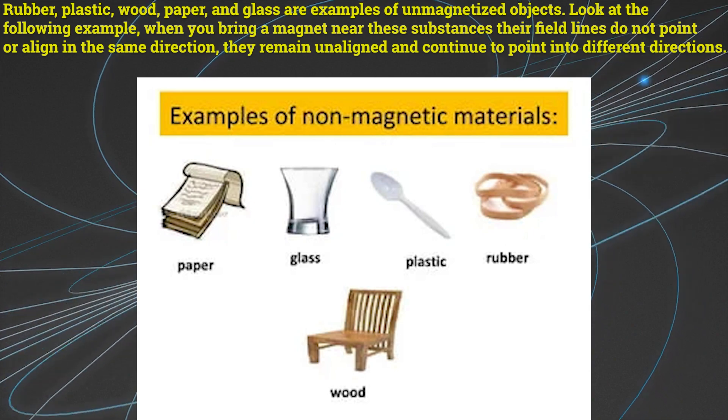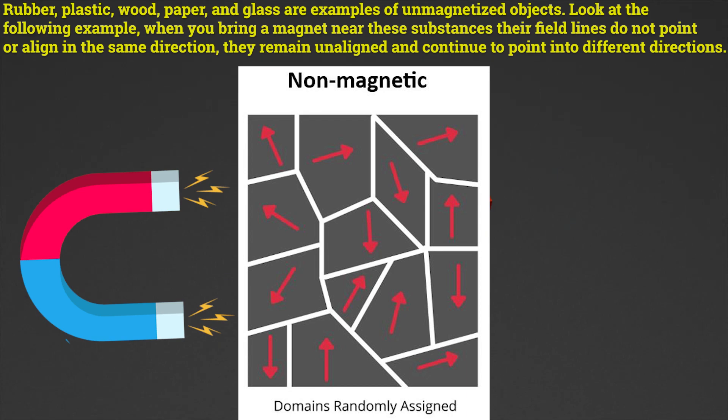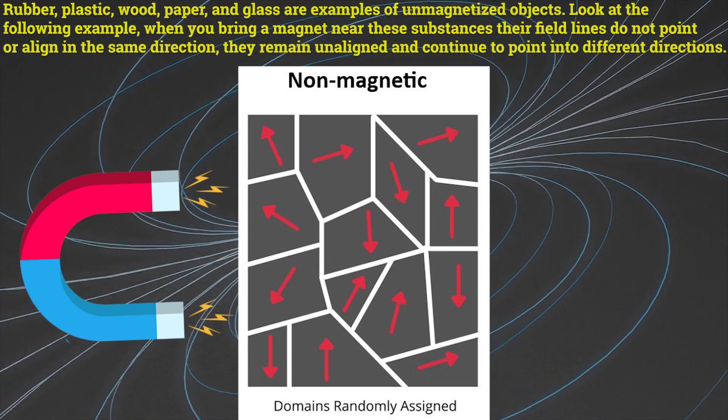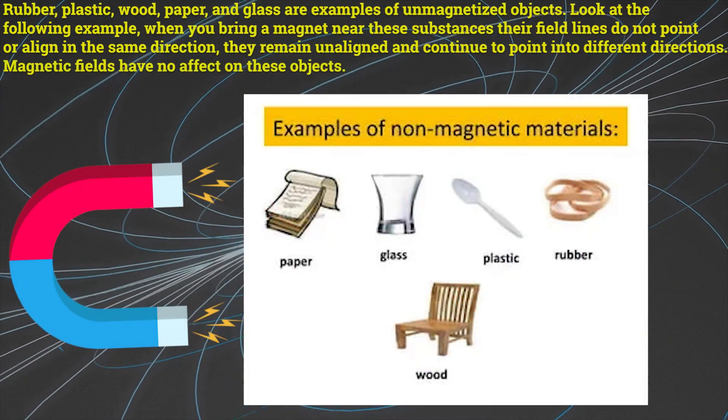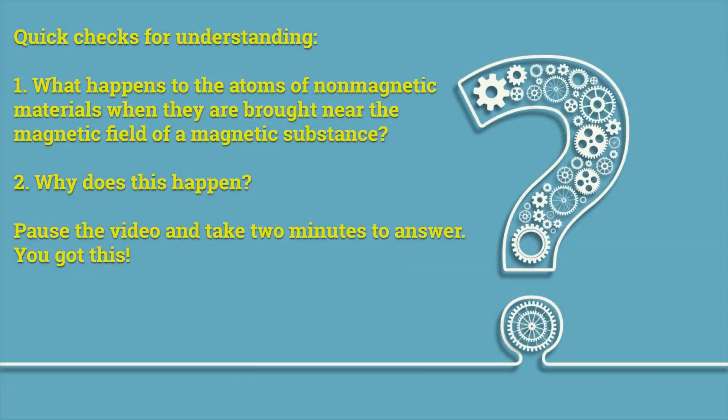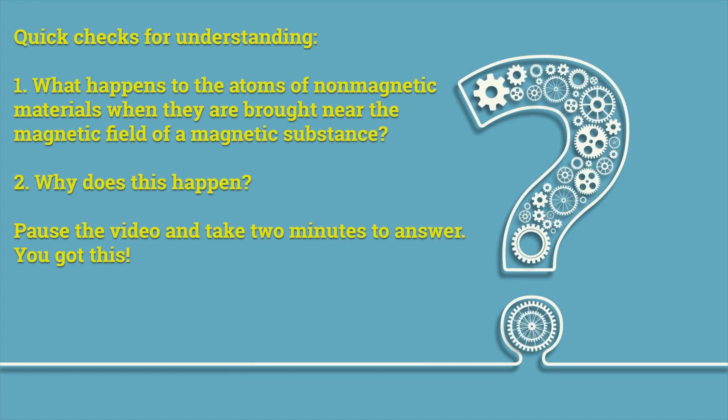Look at the following example. When you bring a magnet near these substances, their field lines do not point or align in the same direction. They remain unaligned and continue to point in different directions. Magnetic fields have no effect on these objects. Quick checks for understanding. Number one, what happens to the atoms of non-magnetic materials when they are brought near the magnetic field of a magnetic substance? Number two, why does this happen? Pause the video and take two minutes to answer. You got this.